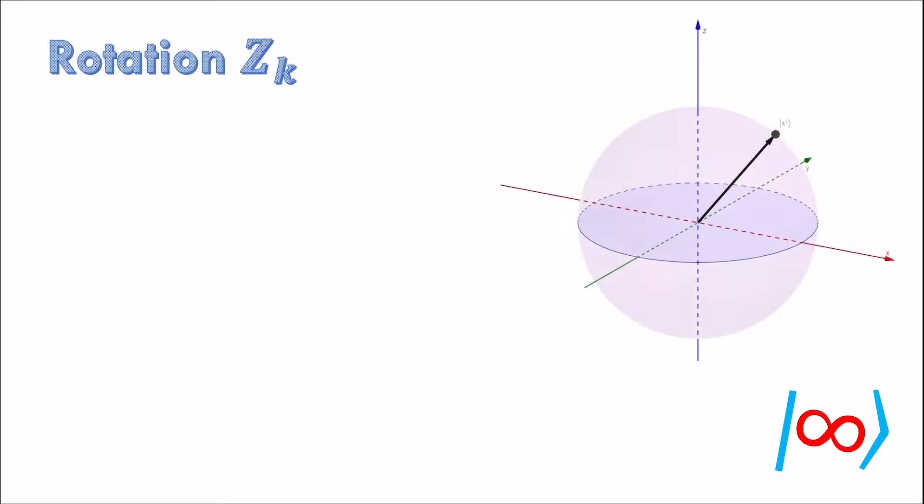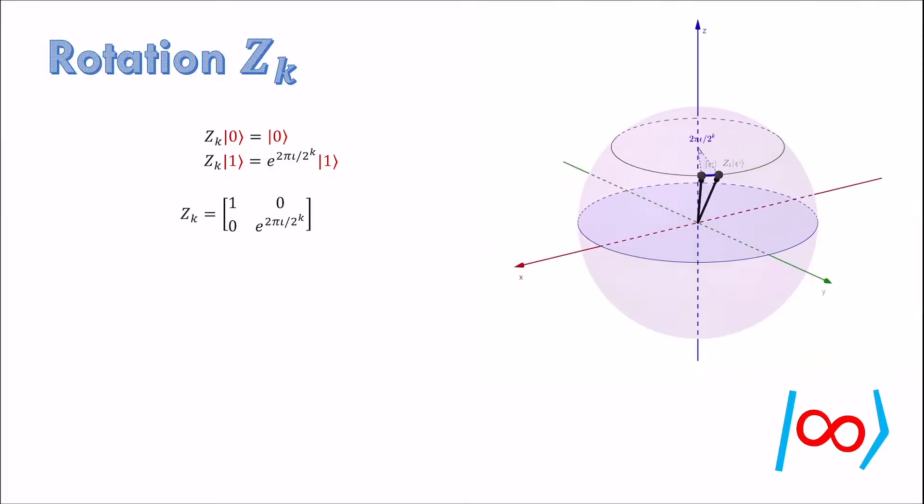Quantum Fourier transform uses a discretized family of Z_phi gates we call Z_k gates. For a given positive number k, the Z_k gate rotates the state about z-axis by an angle 2 pi by 2 power k. It is important to keep in mind at this point that the quantum computer has to implement these gates internally for each value of k.